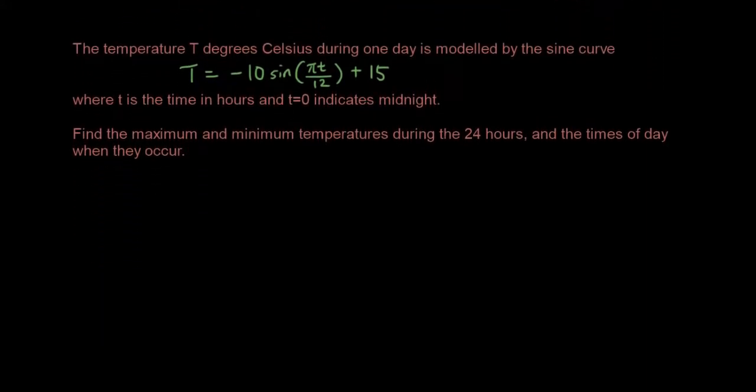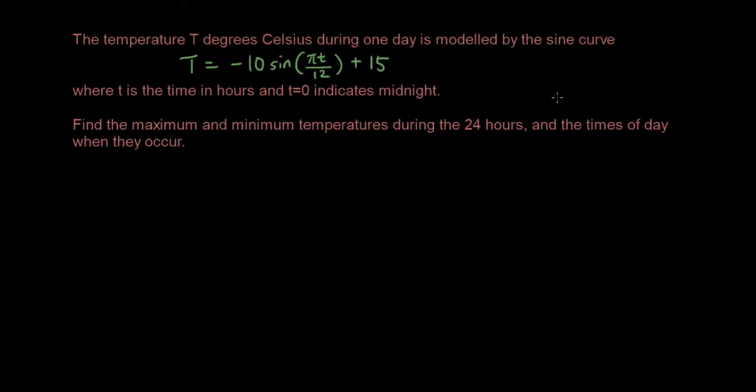So how do we use this information to solve real-life problems? Here is a real-life problem. The temperature T degrees Celsius during one day is modeled by the sine curve: T equals negative 10 times sine bracket π t over 12 bracket plus 15, where t is the time in hours and t equals zero indicates midnight. Find the maximum and minimum temperatures during the 24 hours and the times of day when they occur.